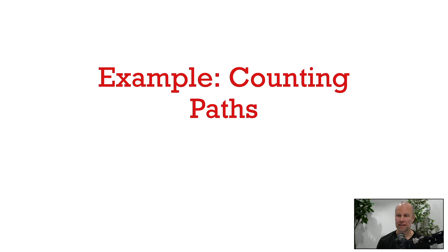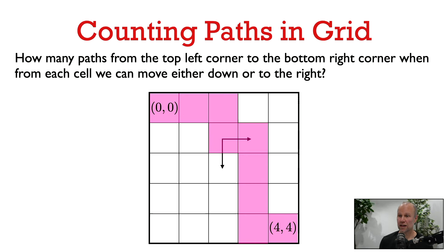Let's look at another example of dynamic programming in action. This time we're going to look at counting the number of paths from one vertex to another in a certain directed acyclic graph. The graph we're going to use is very simple — just this grid graph here. From every cell in this grid, you can move to the right or down. The question is: how many ways are there to go from the square in the top left corner to the square in the bottom right corner?